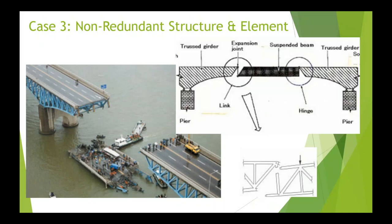This is a deck truss bridge with a total length of 1,160 meters, built in 1979. The main span consisted of a suspension span connected with pins. Because of non-redundancy, the whole suspension span collapsed in 1994 due to improper welding of the steel truss of the suspension structure below the concrete slab.